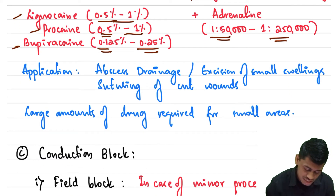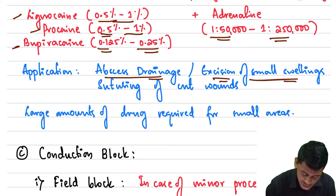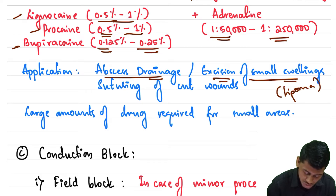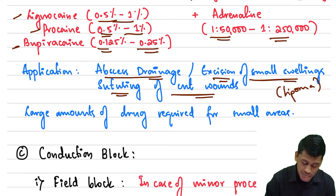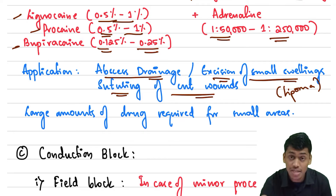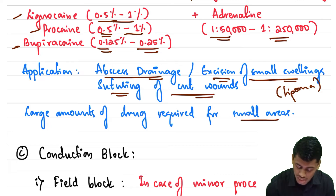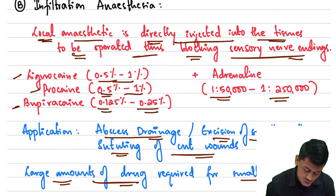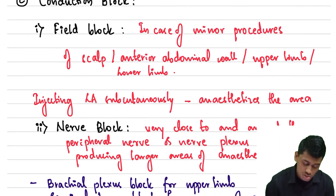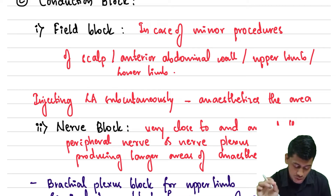Infiltration anesthesia is used for abscess drainage, excision of small swellings such as lipoma, and suturing of lacerations. However, a large amount of drug is required even for a small area of anesthesia — this is a key drawback of infiltration anesthesia.